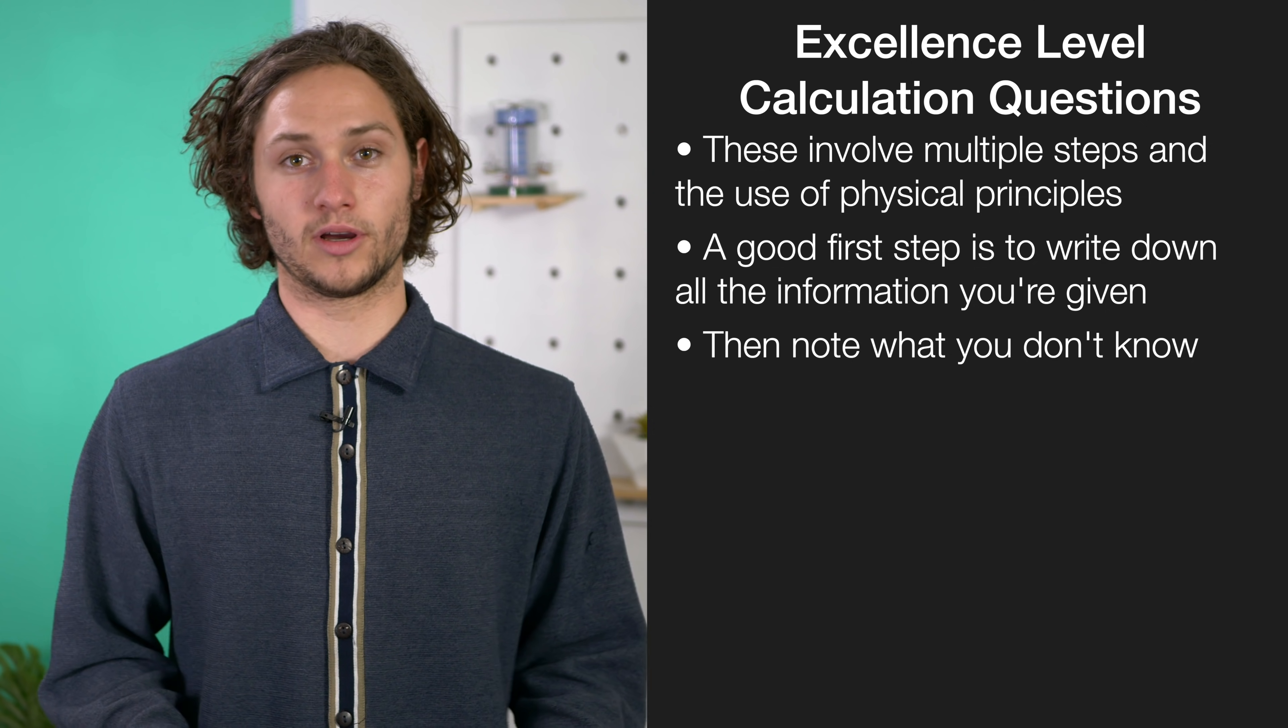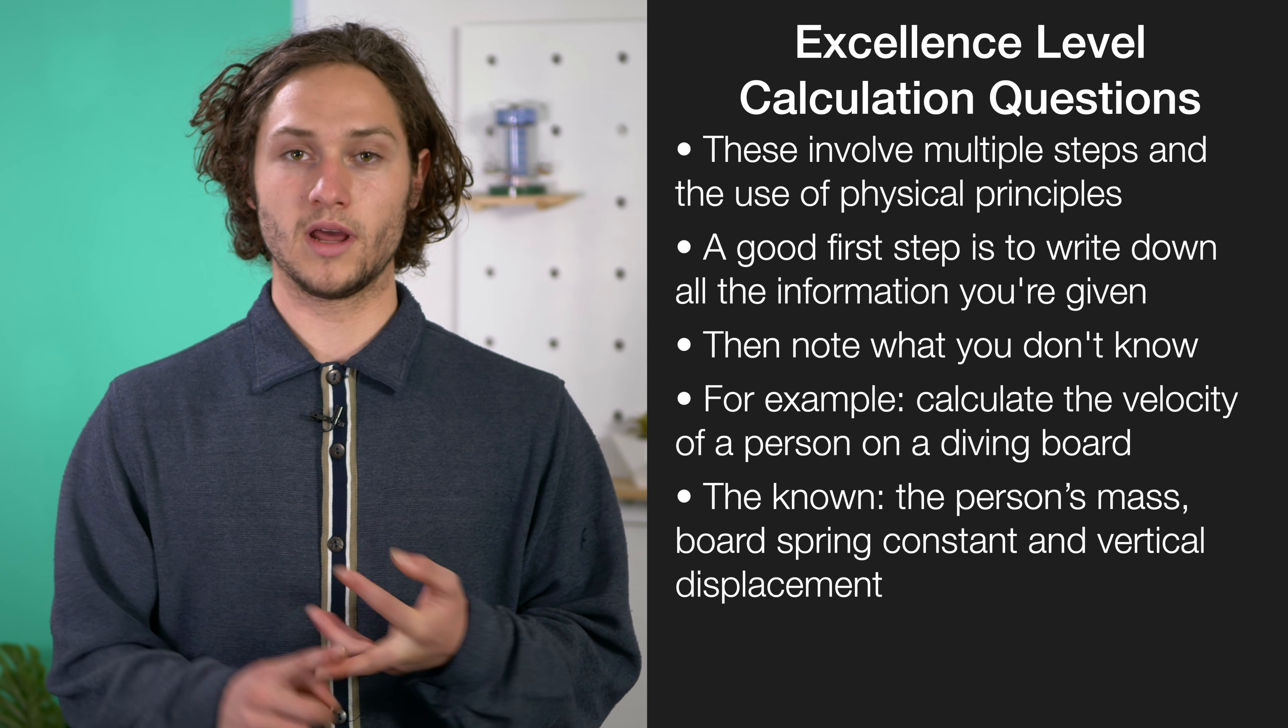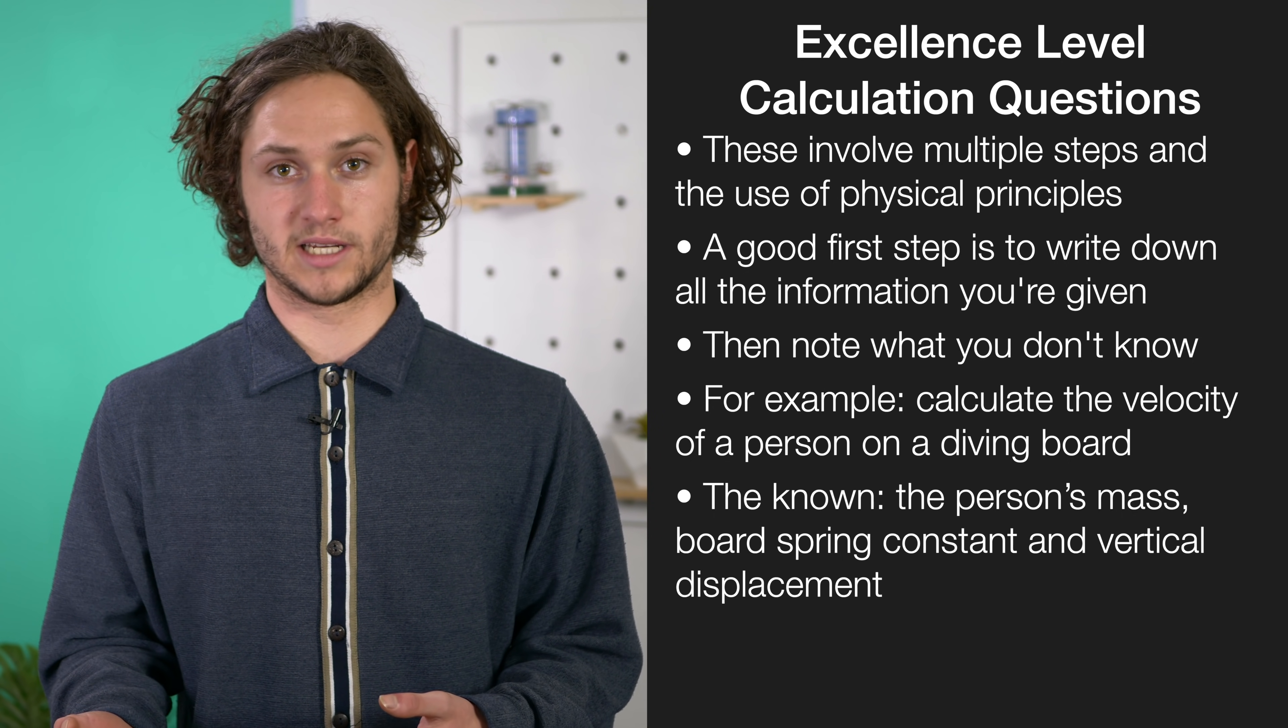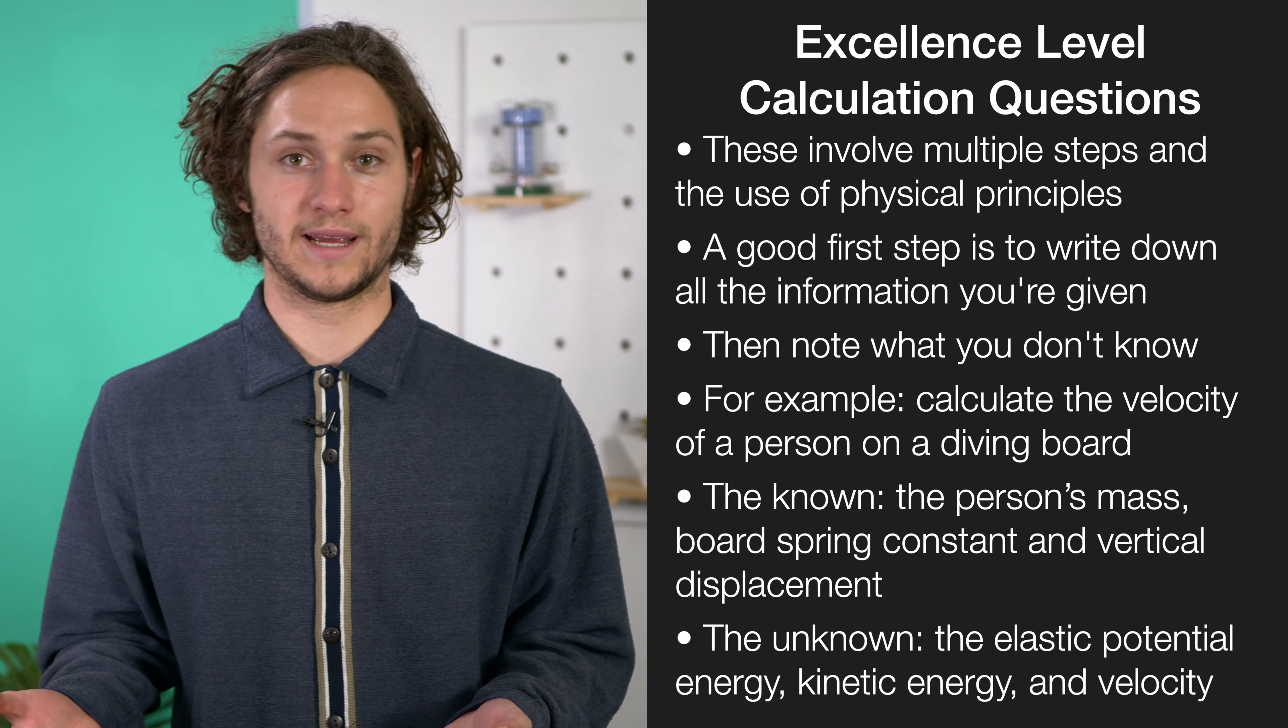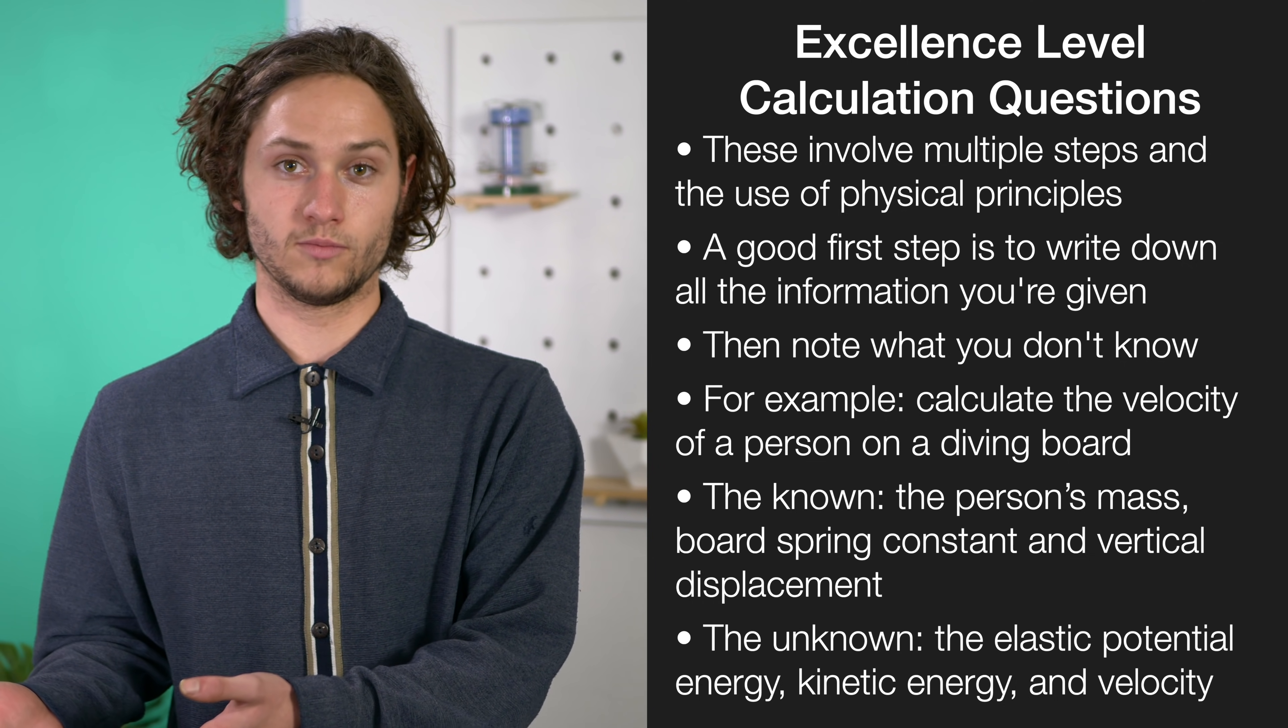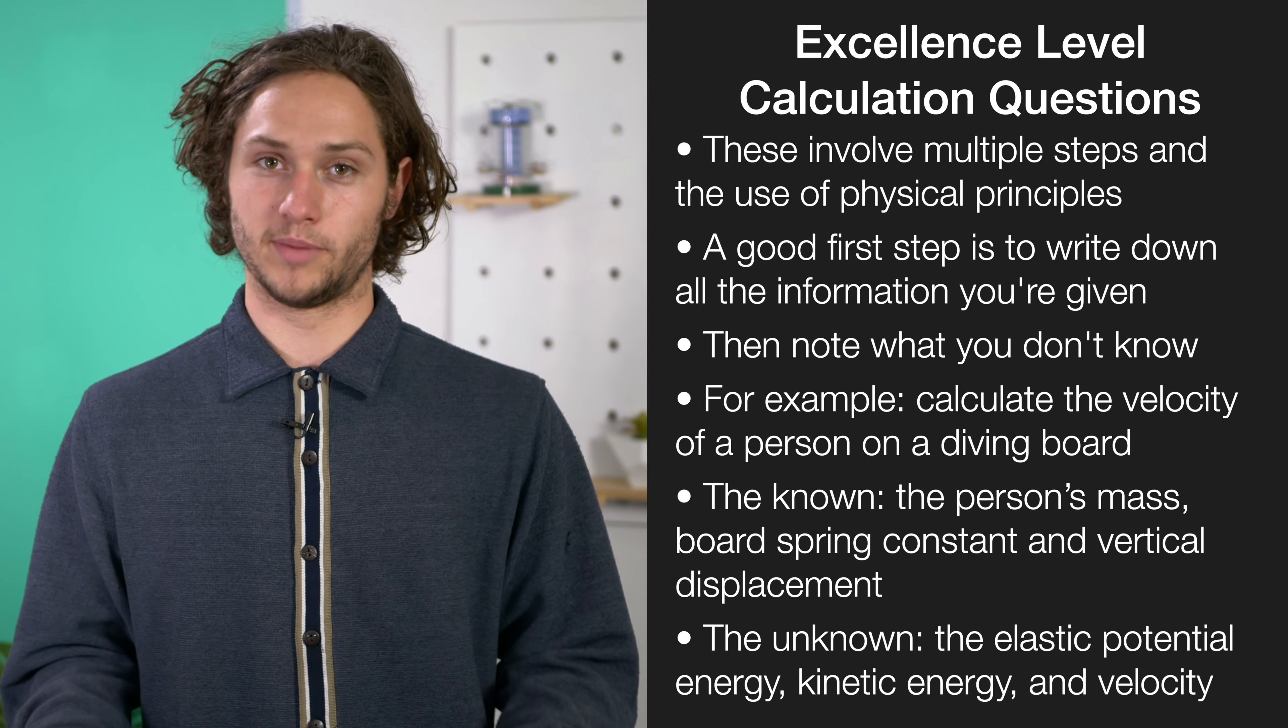Let's take a look at an example like someone bouncing on a springboard, where the spring constant of the board is known, the mass of the person is known, and also the vertical displacement of them bouncing on the board. Well, we know that due to conservation of energy, all of this elastic potential energy will be converted to kinetic energy the moment they leave the board. So, we can calculate the elastic potential using what is known, and we want to know the velocity, which requires setting EP equal to EK. Then, we solve for EP, rearrange the whole equation for the velocity and solve for that. There's a few steps involved, but if you practice it a lot, it should be relatively easy.